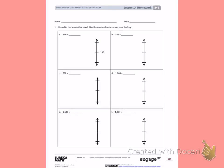This is Module 2, Lesson 14. Today's objective was to round to the nearest hundred on the vertical number line.